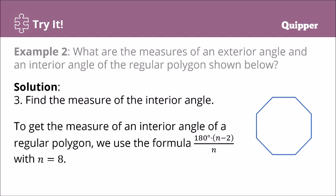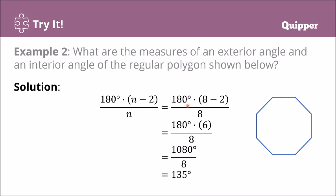How about the interior angle? To get the measure of the interior angle of a regular polygon, we use the formula 180 degrees times (n minus 2) divided by n, where n equals 8. That is 180 degrees times (8 minus 2) divided by 8. Eight minus 2 is 6. And 180 degrees times 6 is 1080 degrees divided by 8, which equals 135 degrees. Each interior angle measures 135 degrees.